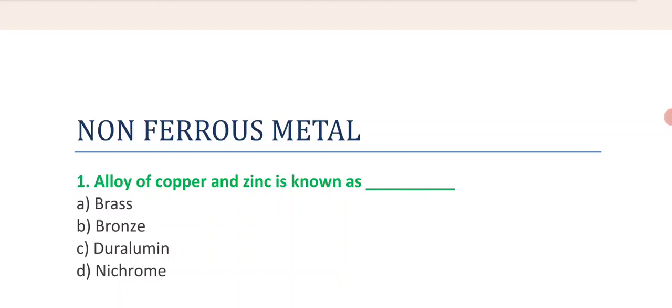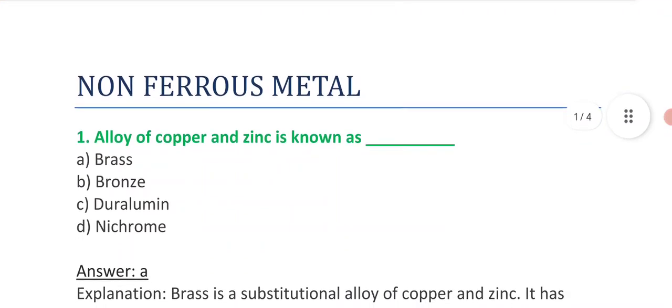Alloy of copper and zinc is known as: brass, bronze, duralumin, d option is nichrome. And answer is A, option A, brass.